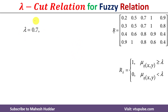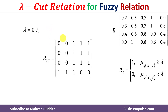Now let's consider lambda equals 0.7. The fuzzy relation contains 0.2 which is less than 0.7, hence the lambda cut relation contains 0. The fuzzy relation contains 0.5 which is also less than 0.7, hence the lambda cut relation contains 0. The fuzzy relation contains 0.7 which is equal to 0.7, hence the lambda cut relation contains 1.